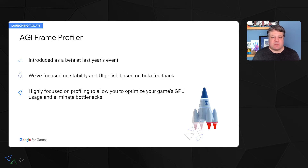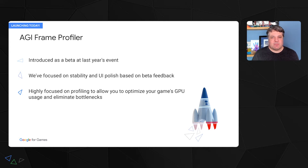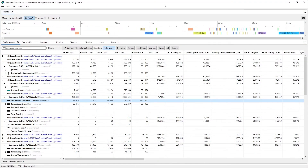We first introduced AGI Frame Profiler at the last Google for Games Summit, when we launched it as an experimental beta feature. Since then, we've closely collaborated with top studios and partners. We've been busy fixing bugs and improving device support, polishing the tool, and improving the profiling features based on extensive feedback from early adopters. And now, we are proud to announce that we are bringing AGI out of beta with both the System and the Frame Profiler. Let's now take a quick look at AGI's Frame Profiler and how it can help you profile and debug your game.